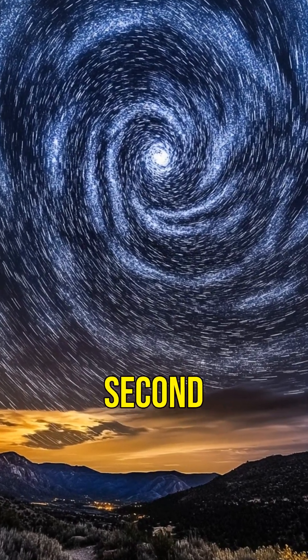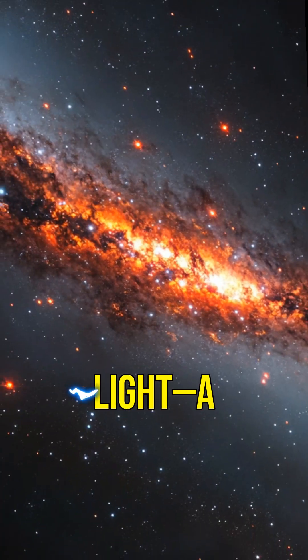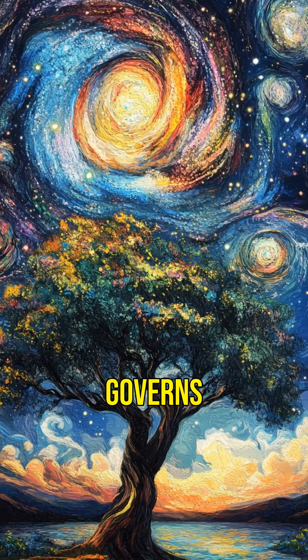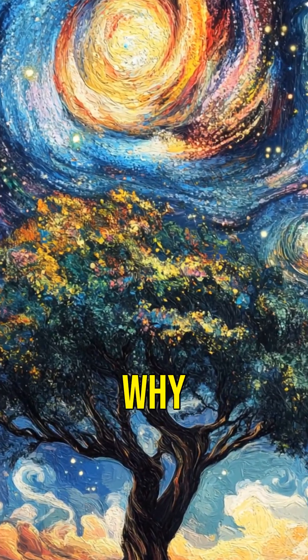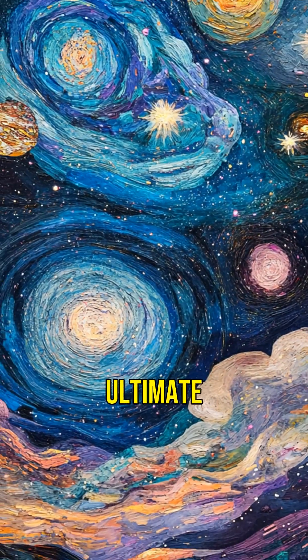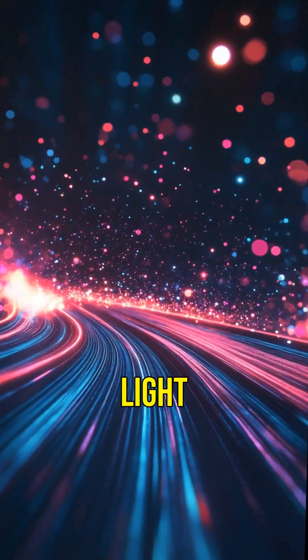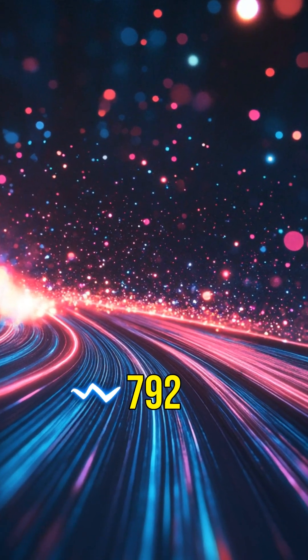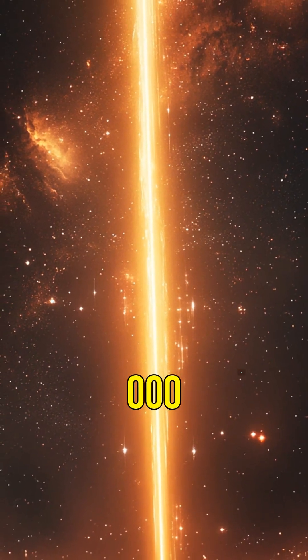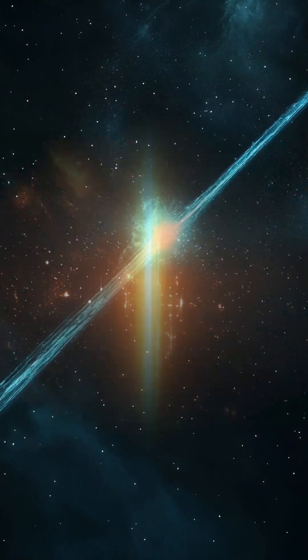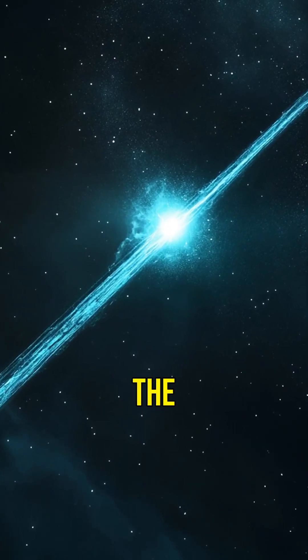186,000 miles per second - that's the speed of light, a cosmic speed limit that governs the entire universe. But why? What makes this the ultimate limit of reality? The speed of light is 299,792 kilometers per second, or about 186,000 miles per second. Light is the fastest thing in the universe.